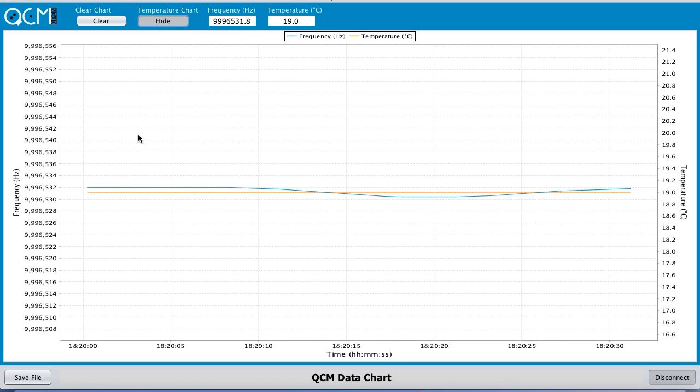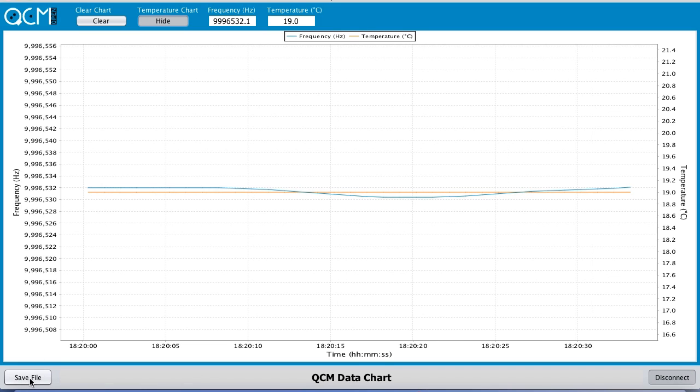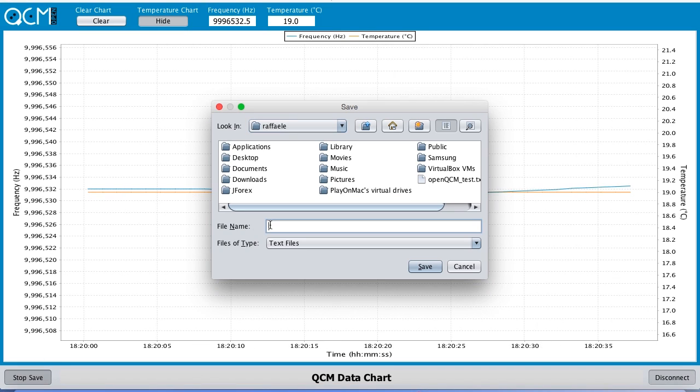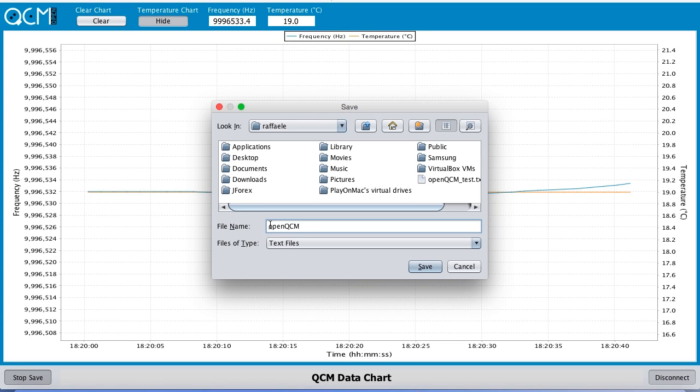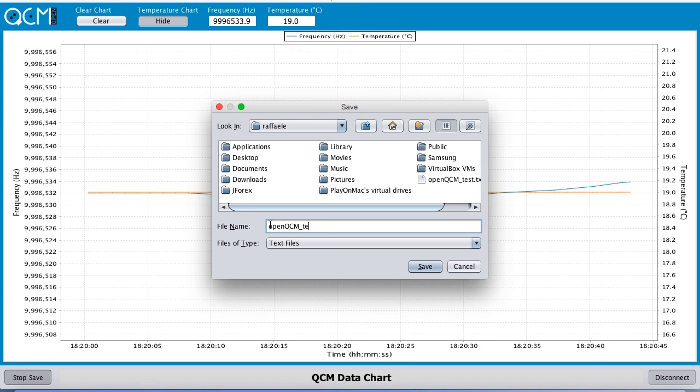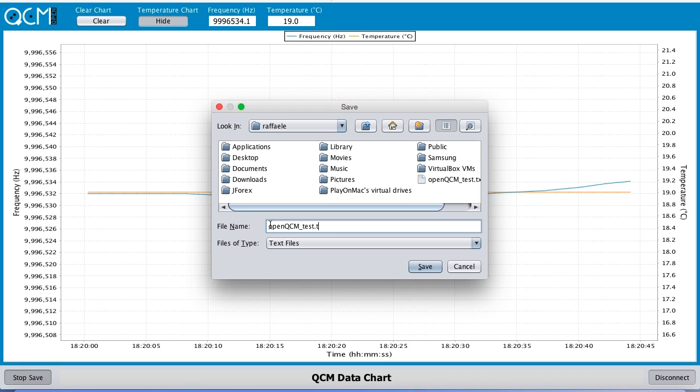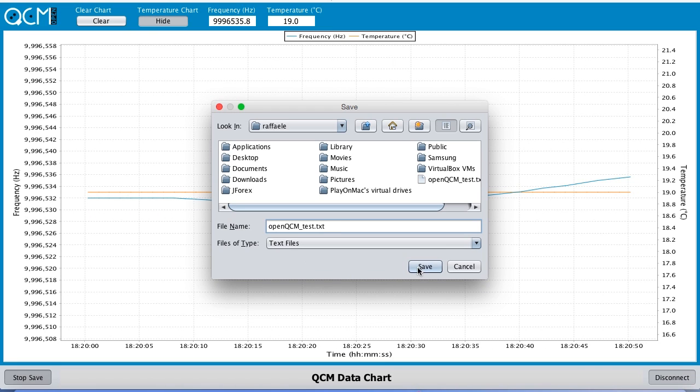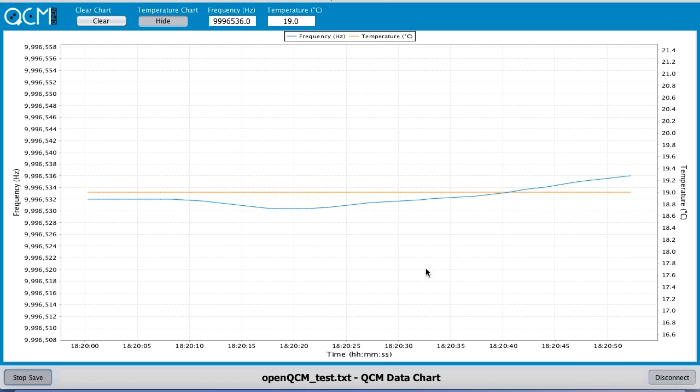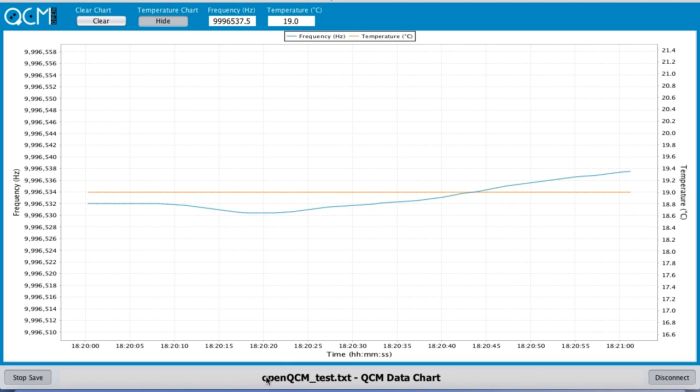Press the save file button. A pop-up will be displayed. You can save a new file or choose an existing one. The new data will be appended to the existing data. Press save to log the new data.